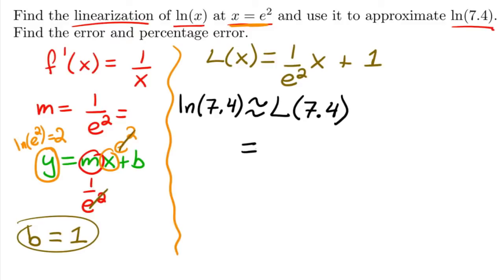This is equal to 1/e² times 7.4 plus 1, which is about—I'm going to do a lot of decimal places because it's very close—2.001481096.